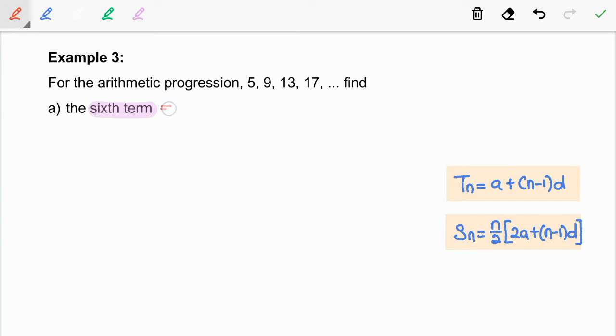This refers to T6. Based on the sequence given, the first term is 5. The common difference is 4 by taking the second term minus the first term.